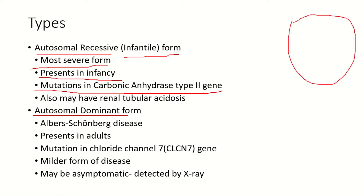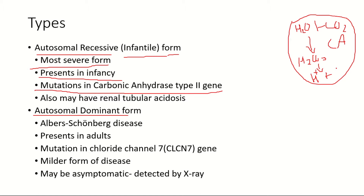Here I'm drawing the osteoclast cells. The osteoclast cells, in order to destroy the bone, require an acidic environment. They get this from the enzyme carbonic anhydrase present within them. This carbonic anhydrase enzyme combines water and carbon dioxide to form carbonic acid (H₂CO₃). This carbonic acid dissociates into H⁺ (proton) and HCO₃⁻ (bicarbonate).